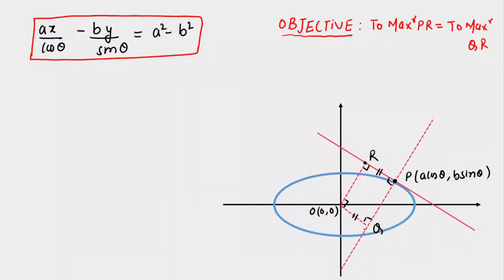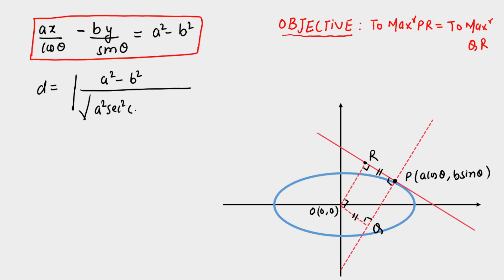The perpendicular distance d from the origin to the normal equals OQ, which equals PR. Substituting (0, 0) into the normal equation and taking the modulus, we get: d = |a² − b²| / √(a²sec²θ + b²csc²θ), since the denominator terms are a²/cos²θ = a²sec²θ and b²/sin²θ = b²csc²θ.